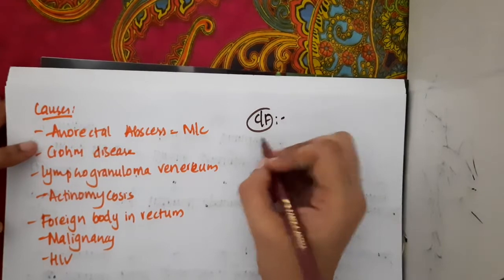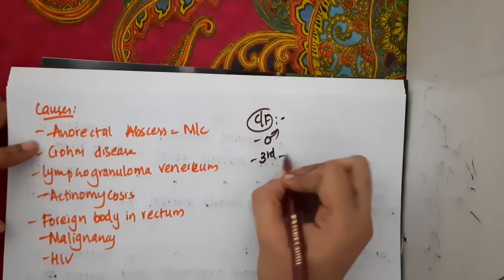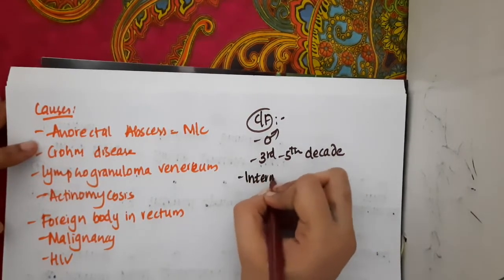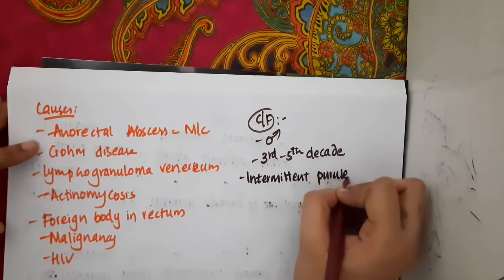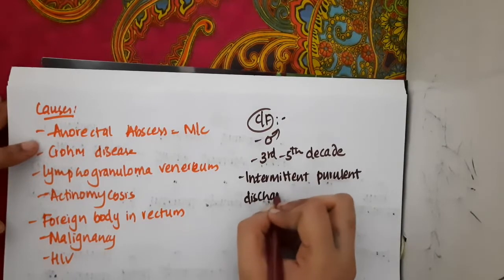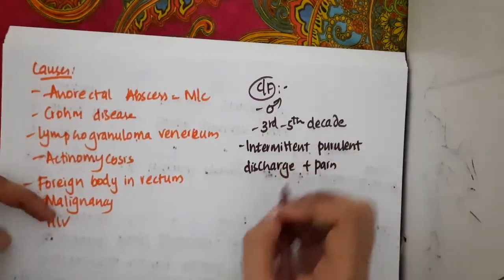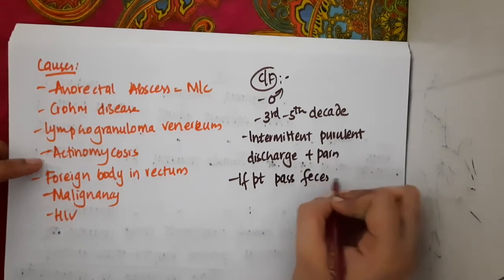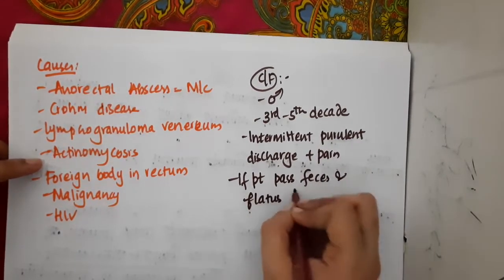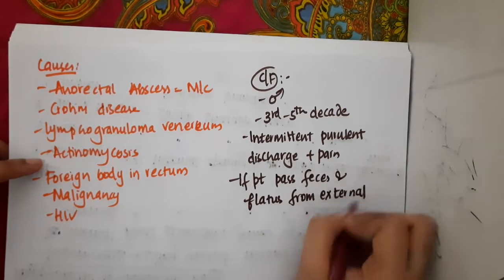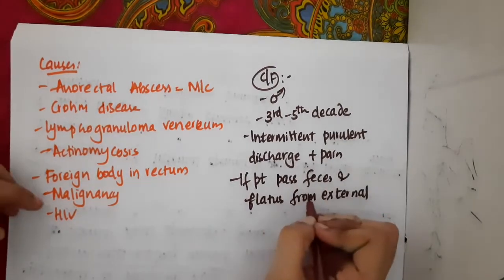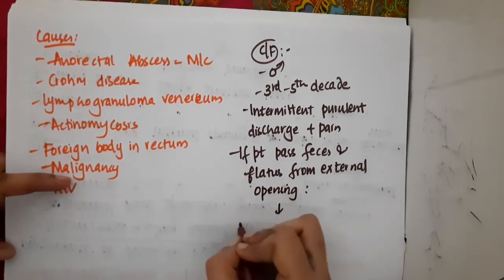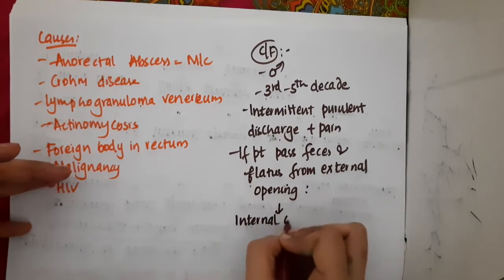Clinical features: fistula in Ano is most common in males around the 3rd to 5th decade of life. The patient will have intermittent purulent discharge from the fistula and will also suffer from pain. The patient can also pass feces or flatus from the external opening, which confirms that the internal opening is present in the rectum.